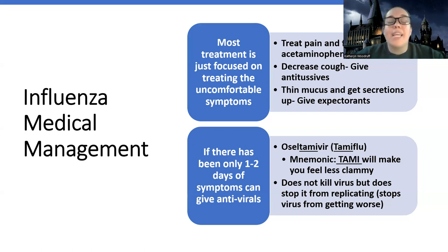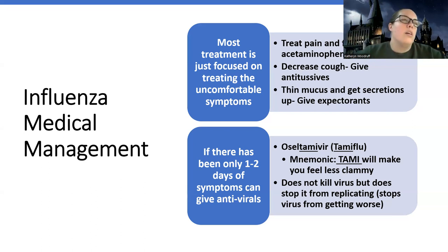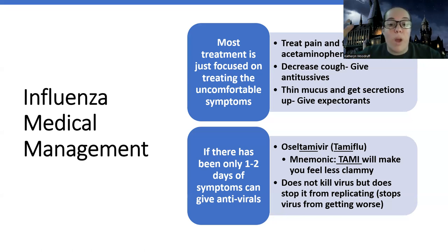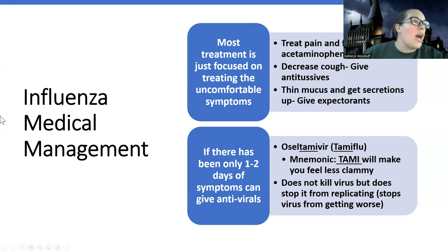If there's only been one or two days of symptoms, we can give antivirals. This is oseltamivir, also known as Tamiflu. It doesn't actually kill the virus itself, but it stops the virus from replicating, so it stops it from getting worse. It can decrease the amount of time you suffer with flu symptoms, but it's not going to kill the virus itself. It can only be given within the first few days — so if you have a test question saying it's been three or four days, this is not going to be an appropriate medication.